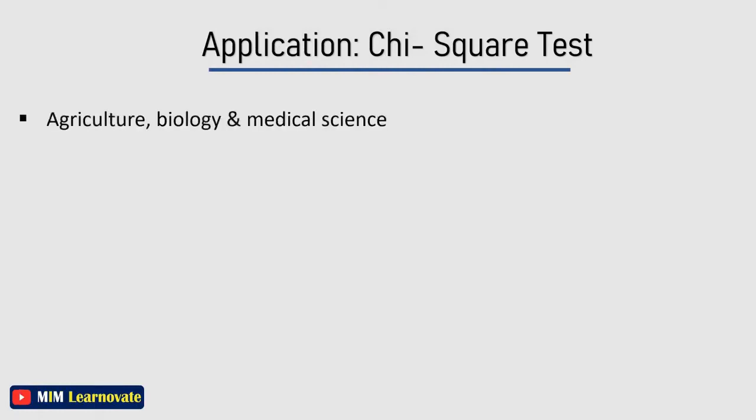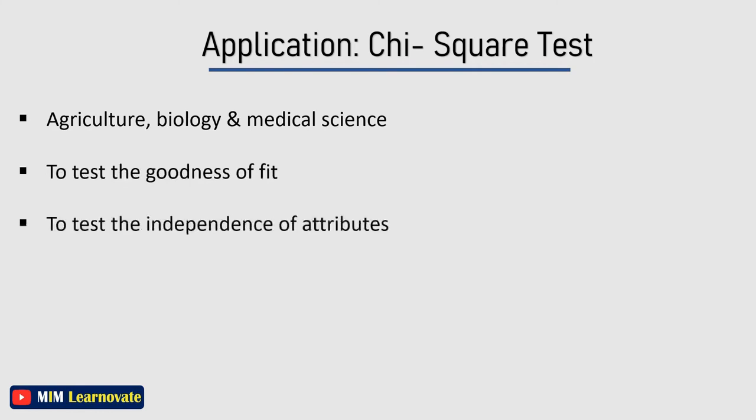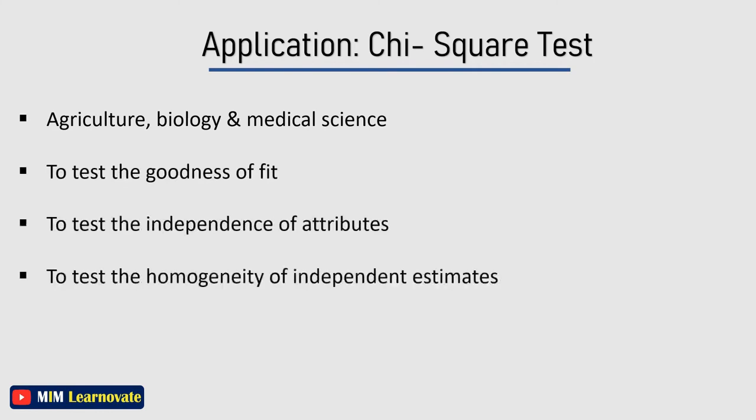Application of chi-squared test: the chi-squared test is applicable to varied problems in agriculture, biology, and medical science — to test the goodness of fit, to test the independence of attributes, to test the homogeneity of independent estimates of the population variance, and to test the deduction of linkage.